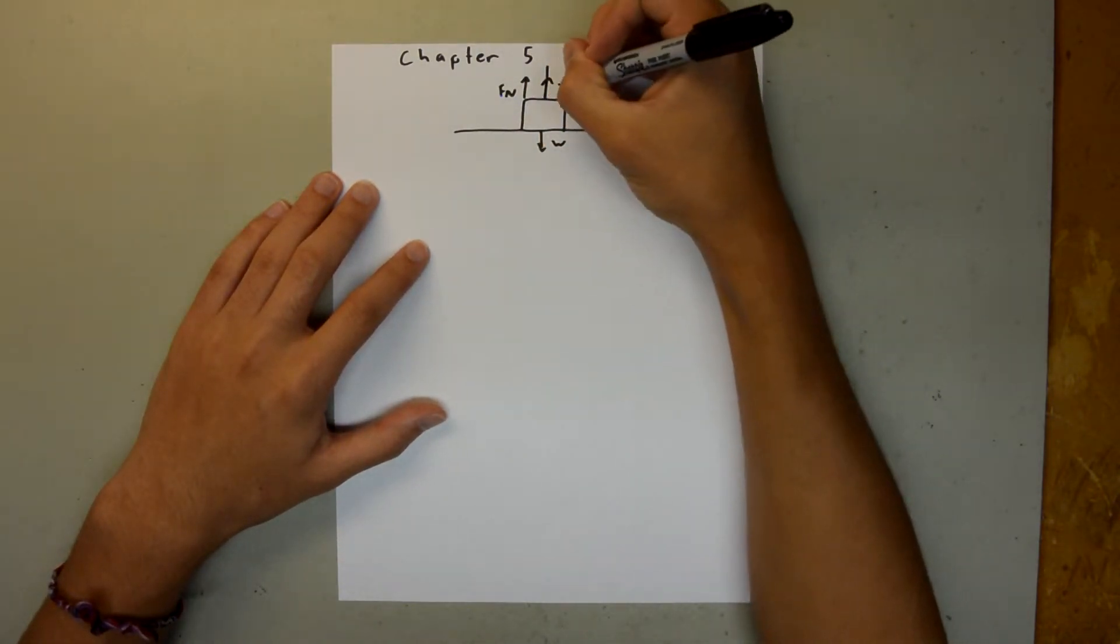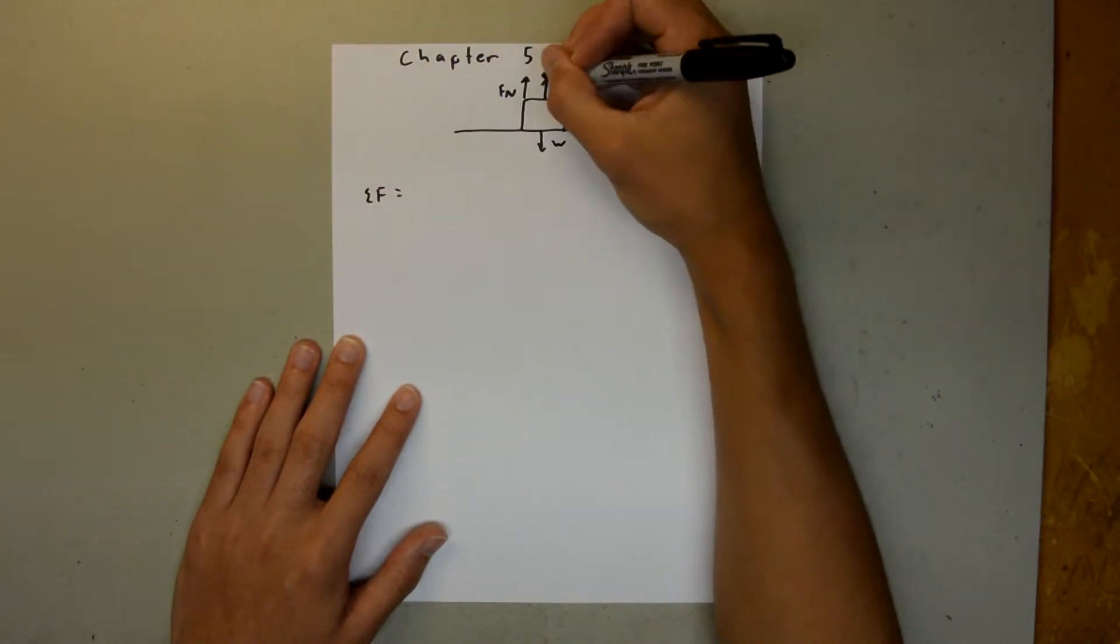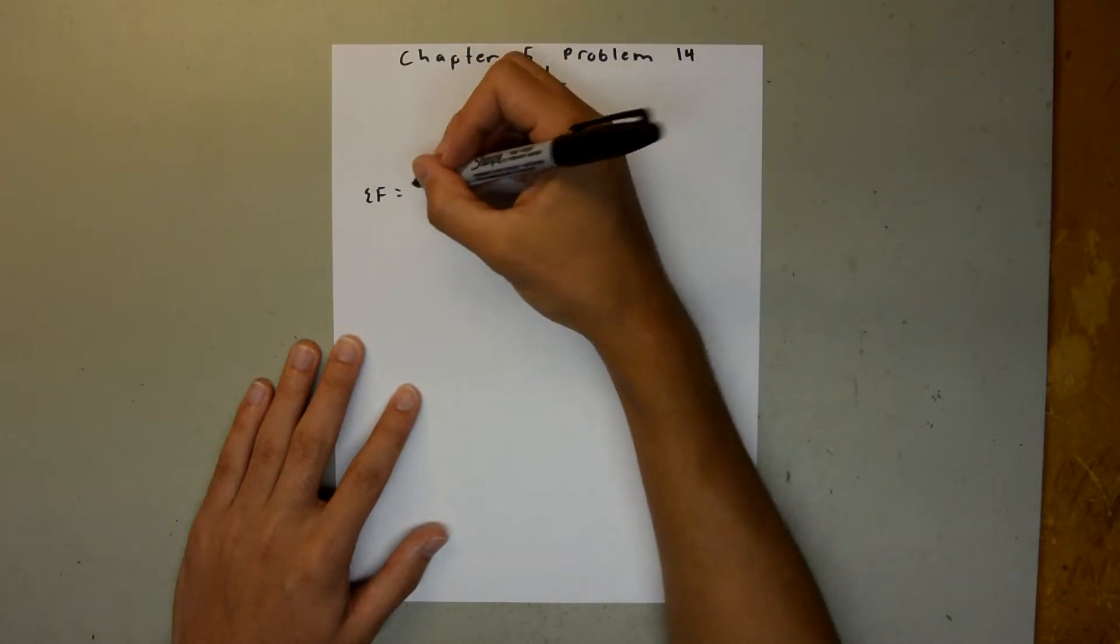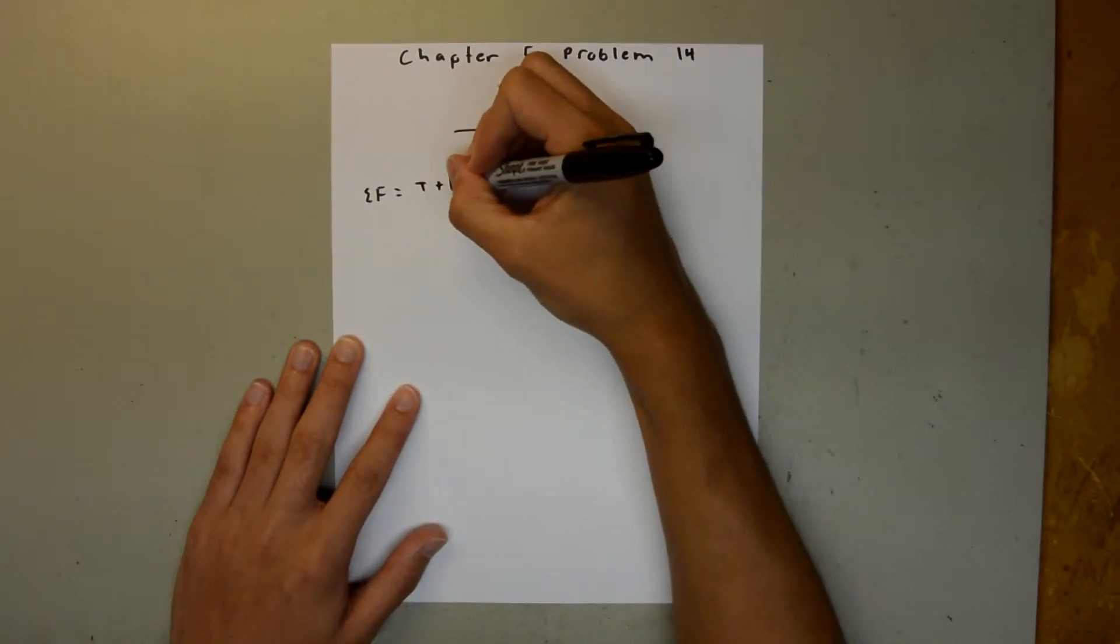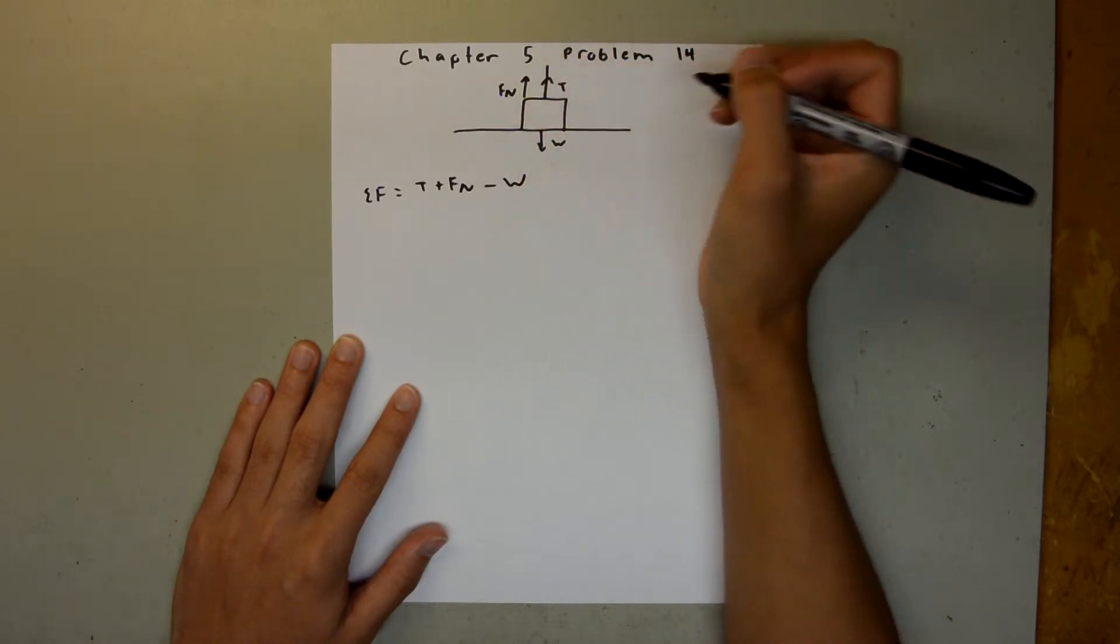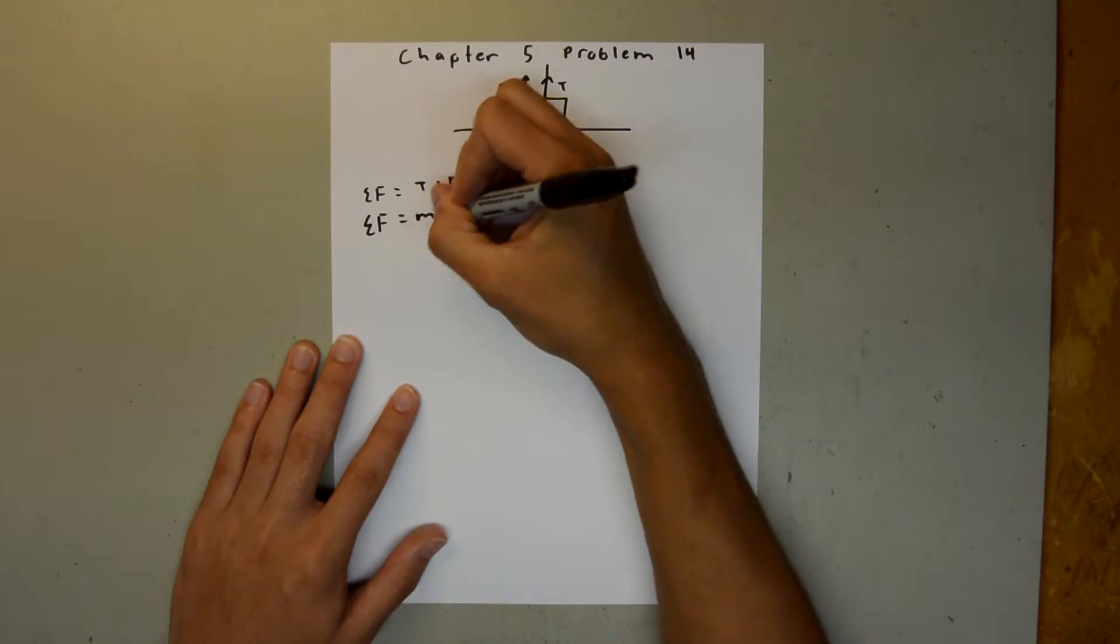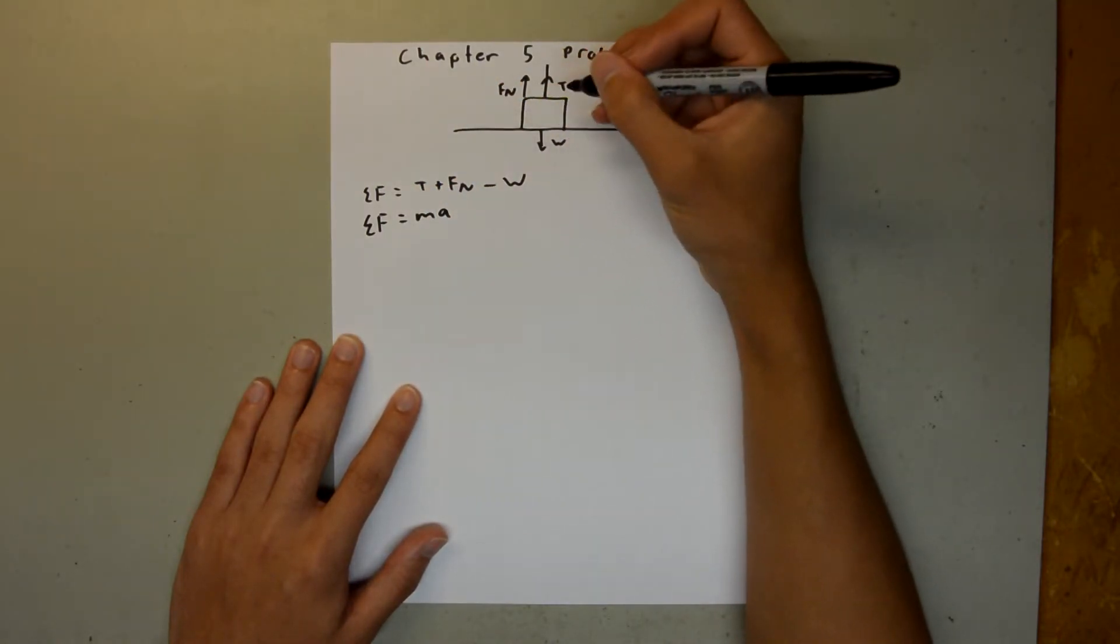We know that the sum of the forces is equal to our tension plus our normal force minus the weight force. We also know that the sum of the forces is equal to ma, but since this block is at rest, it's not accelerating.